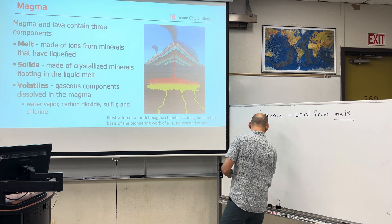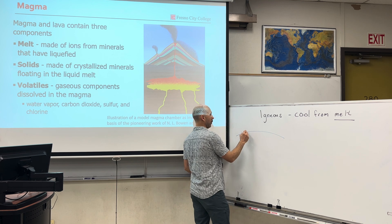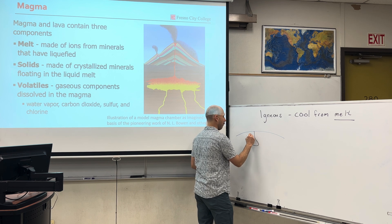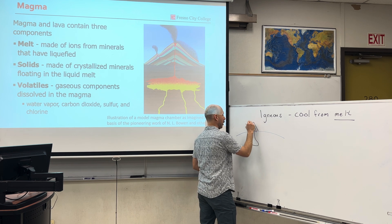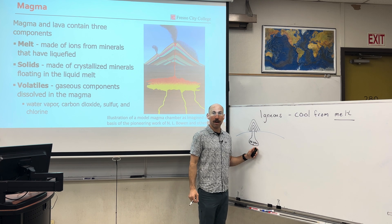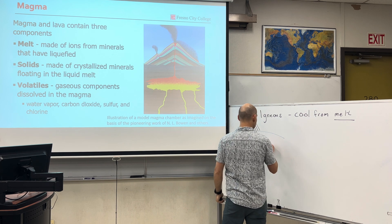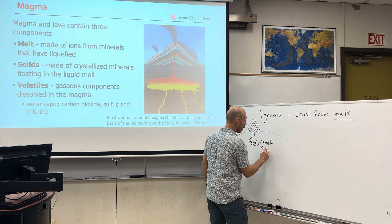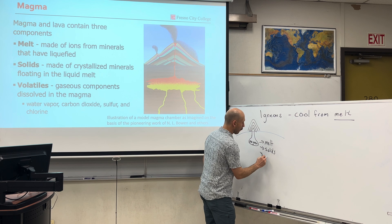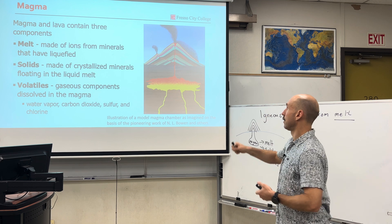So let's talk about it. What is magma? Here's the surface of the earth. We'll call this a magma chamber feeding a volcano. Magma is liquid rock underneath the surface of the earth and it is composed of three parts. It has the melt. There are solids — minerals that have crystallized out, which we'll get into at the end of this lecture — and then volatiles, which are dissolved gases in the magma.